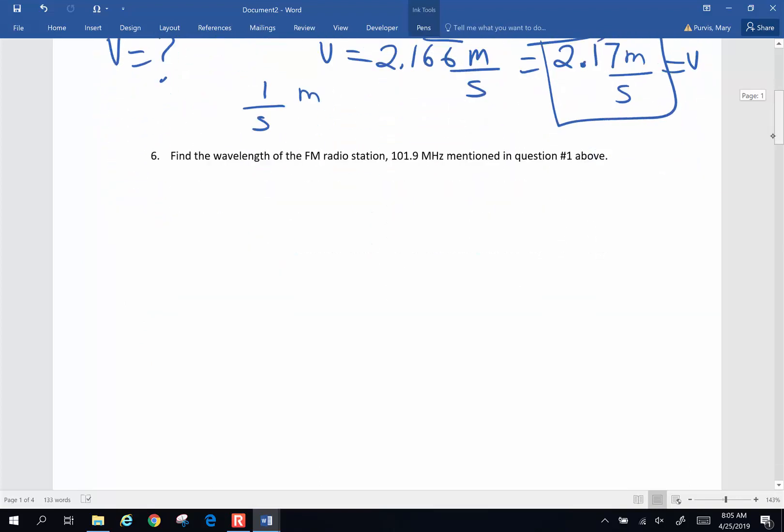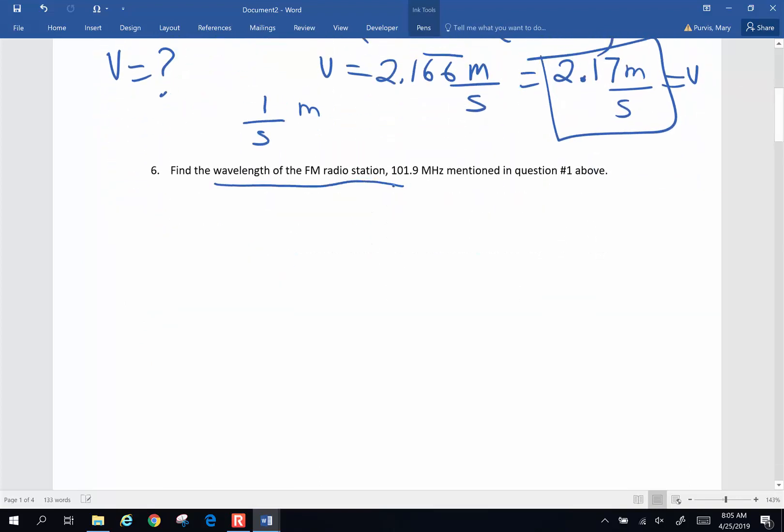Number 6. Find the wavelength of the radio station mentioned in question number 1. So here is the frequency. The frequency of broadcast is 101.9 megahertz. Mega is times 10 to the 6th. Hertz is the correct unit for frequency. We want to know wavelength. Wavelength is question mark.